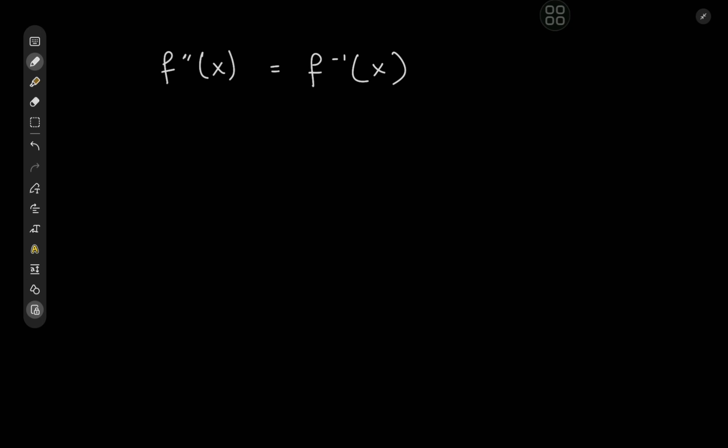The first thing we can do is take a guess at the structure of the function that would satisfy such a differential equation, and that is pretty easy to make. We could take f to be a power function alpha times x to the beta, where alpha and beta could be complex numbers. The reason for that is the second derivative of a power function and its derivative are both power functions as well, and the inverse of a power function is also a power function.